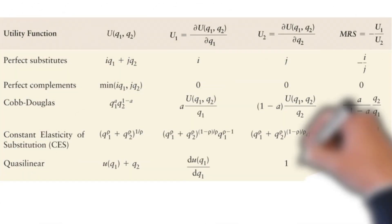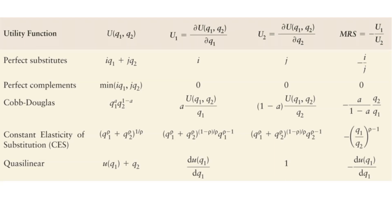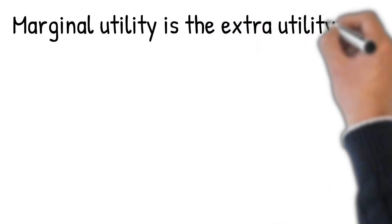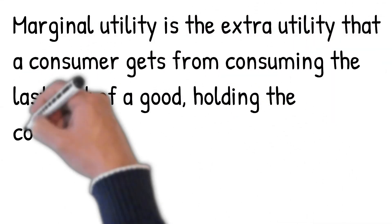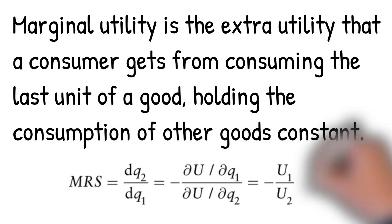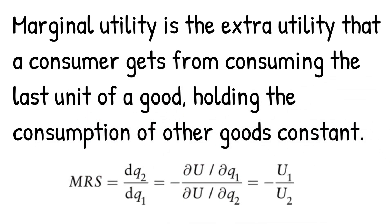Here are the marginal utility and the marginal rate of substitution for the six most commonly used utility functions. The marginal utility is the extra utility that a consumer gets from consuming the last unit of a good, holding the consumption of other goods constant. The marginal rate of substitution is equal to the negative of the ratio of the marginal utilities of the two goods.